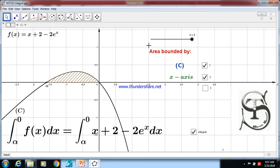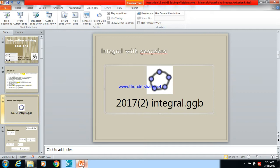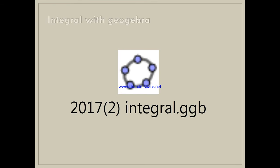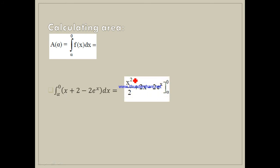Now come back to the PowerPoint. Calculating area first: A(α) equals the integral from α to 0 of f(x) dx. This equals the integral of f(x) dx = x + 2 − 2eˣ. The integral of x is (1/2)x², that is x²/2.